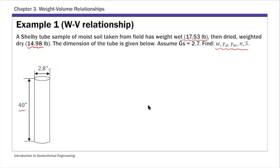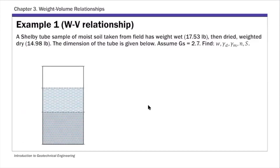To solve this weight-volume relationship problem, the first thing as I mentioned is to draw the correct number of phases. This is a moist soil sample, so you have three phases. Here I'm drawing a phase diagram with three phases. The key to solving this phase diagram weight-volume relationship problem is to fill in both sides - the weight side and the volume side.